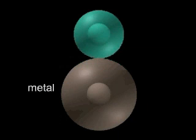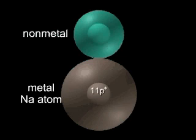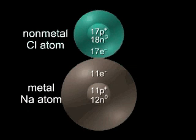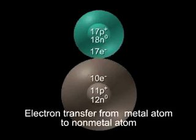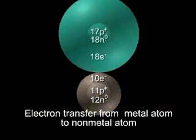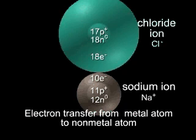Electron transfer from a metal atom to a nonmetal atom. The sodium atom has 11 protons and 12 neutrons in its nucleus and 11 electrons around the nucleus. The chlorine atom has 17 protons and 18 neutrons in its nucleus and 17 electrons surround it. The sodium atom transfers an electron to the chlorine atom and the ions attract each other and release energy. The loss of the electron converts the sodium atom into a smaller positively charged sodium ion, Na+, while the gain of the electron converts the chlorine atom into a larger negatively charged chloride ion, Cl-.